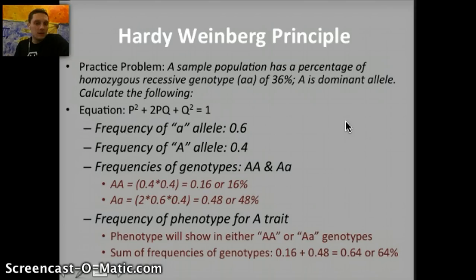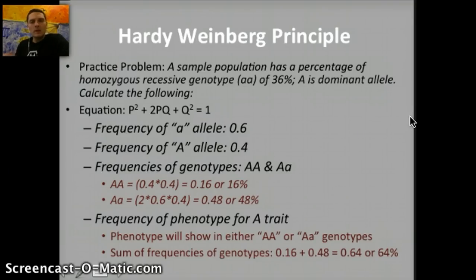On my website, mrropebiology.com, I've linked a number of other practice problems and sites if you want more practice with Hardy-Weinberg. The key thing to remember is that by calculating the allele, genotype, and phenotype frequencies, we can measure whether a population is changing and by how much. Keep the five principles in mind — if those five conditions aren't met, it indicates the population is changing in one form or another.